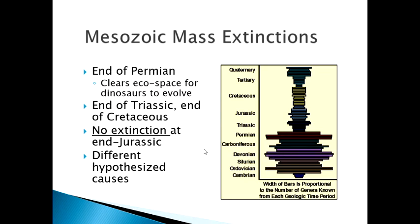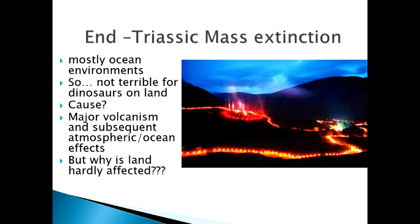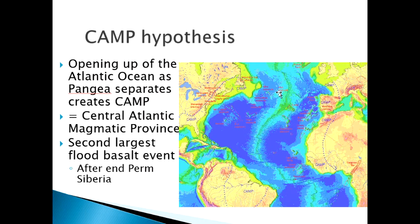For this class we'll worry mostly about the end-Cretaceous, but I want to talk a little about the end of the Triassic as well. The end-Triassic mostly affects ocean environments, so it's not particularly terrible for dinosaurs, although quite a few do go extinct. This end-Triassic mass extinction is associated with a huge period of volcanism and the follow-on atmospheric and oceanic effects. We call it the CAMP hypothesis — the Central Atlantic Magmatic Province hypothesis — which recognizes that the opening of the Atlantic Ocean created a lot of volcanic activity.